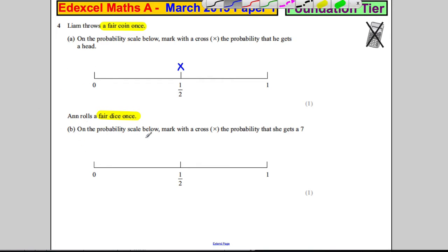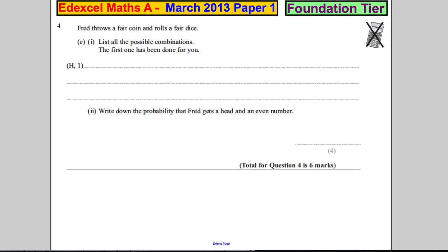On the probability scale, mark with a cross the probability she gets a seven. Now a normal dice has got the numbers one, two, three, four, five, six, and there's no seven. So therefore the probability of getting a seven is zero—there is no seven. Fred throws a fair coin and rolls a fair dice. List all the possible combinations.